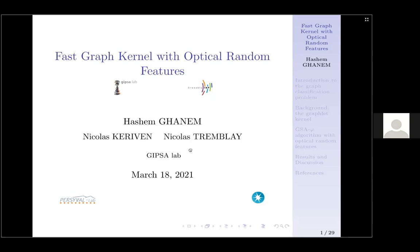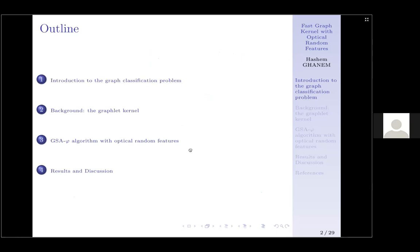In this presentation, we will start by defining graph structures and the graph classification problem. Then we will talk about the graph kernel, which was a source of inspiration in our work. Afterwards, we will move to the third part where our contribution lies — we will present a generic framework in graph classification called GS-AFI. Then we propose to incorporate optical random features in this framework, and finally we empirically and theoretically prove that this combination is efficient in graph classification.